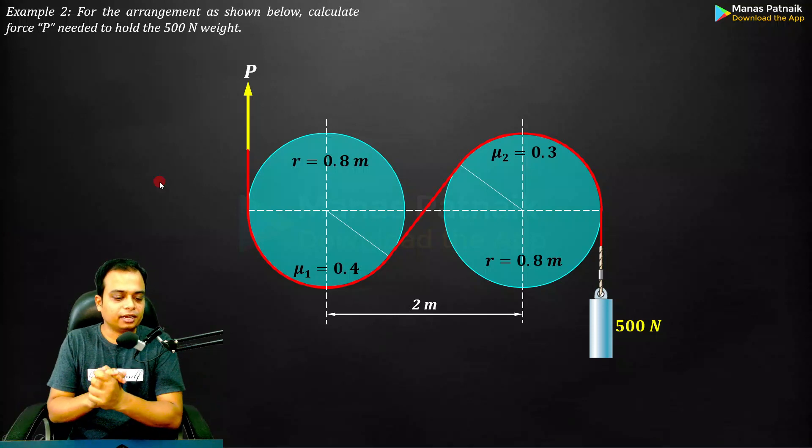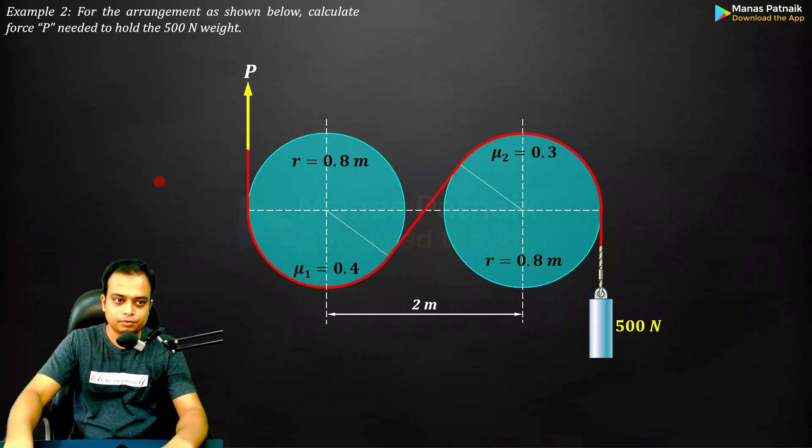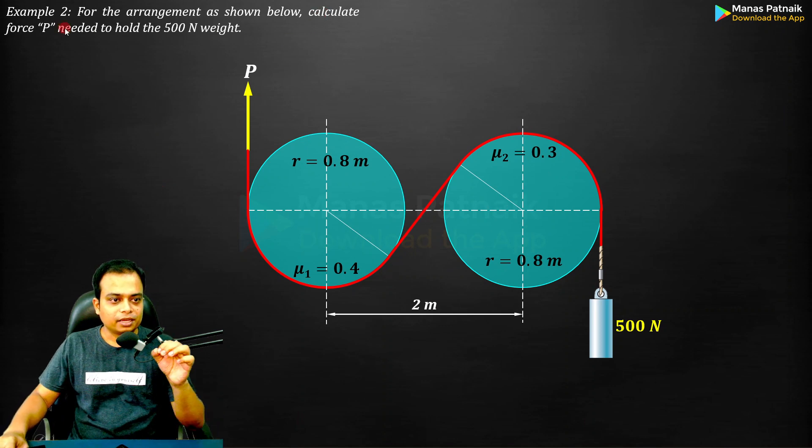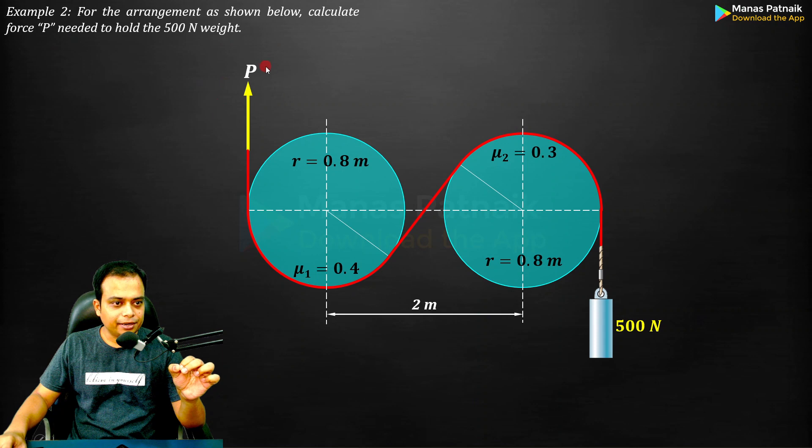Problem number two on belt friction. For the arrangement as shown below, calculate the force P needed to hold the 500 newton weight.